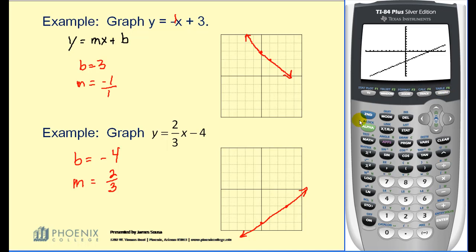Hit graph. It gives you a nice visual that our line looks accurate. But more specifically, if we hit second graph, we can verify that 0 comma negative 4 is one point on the line, and we can now verify that the point 3 comma negative 2 is another point on the line. Therefore, we have graphed this correctly.